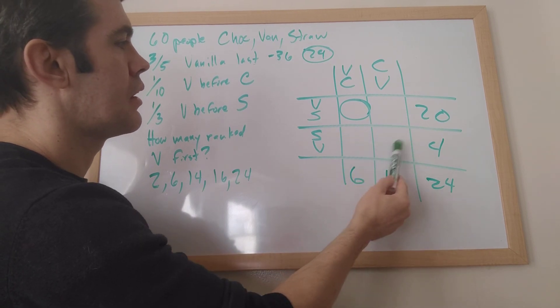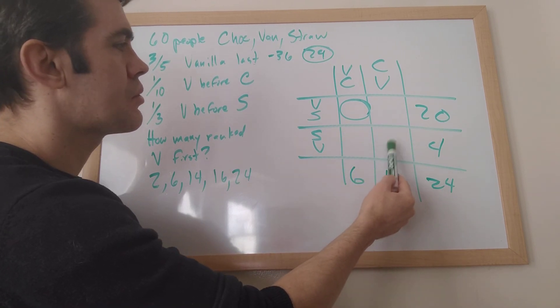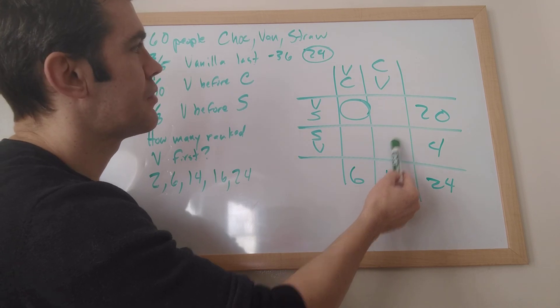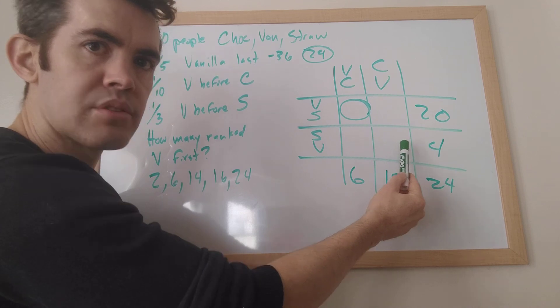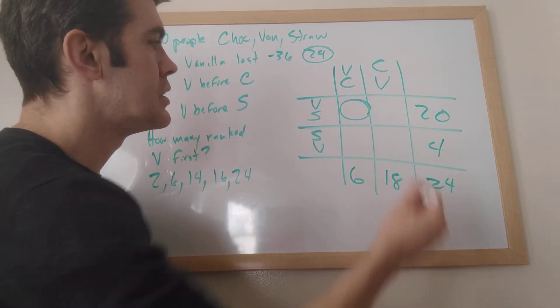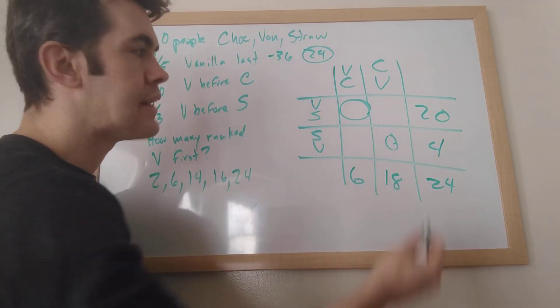This box here represents people who ranked vanilla after chocolate and vanilla after strawberry. In other words, they ranked it last. But we've already eliminated these people. So that means this box is zero.